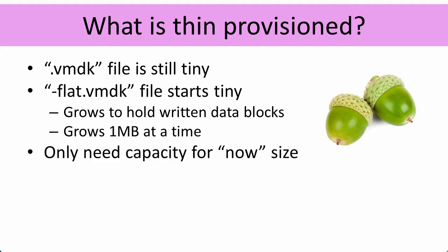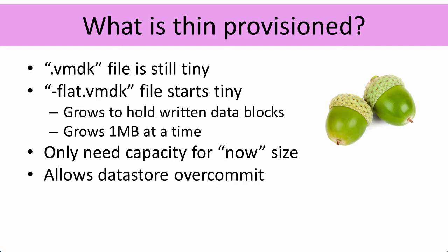We only need enough space on the datastore for the blocks that have been written to. We don't need free space for every block in the VMDK file to be written to. So if I create a 100 gigabyte thin provisioned VMDK file but the virtual machine only writes to 20 gigabytes worth of blocks, I only need space for those 20 gigabytes. This allows us to overcommit — I could have 8 or 10 terabytes worth of VMDK files on a 2 terabyte datastore.